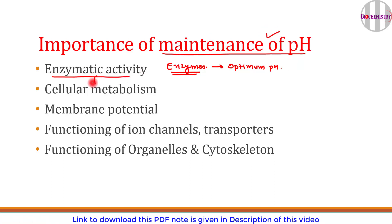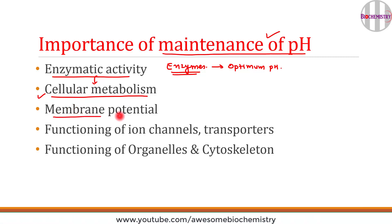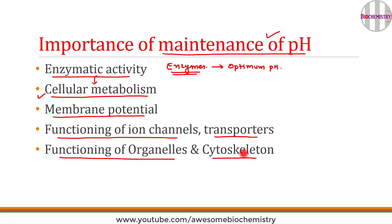Cellular metabolism is dependent on enzymatic activity, which in turn requires proper pH maintenance. Other functions that also require proper pH include membrane potential, functioning of ion channels, transporters, organelles, and the cytoskeleton. Nature has designed our body to maintain pH because otherwise, life would not be possible.